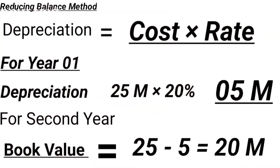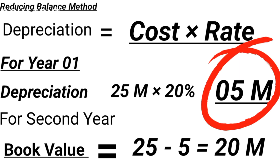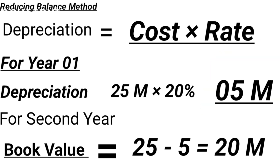Reducing balance method: cost multiplied by rate. For the first year, depreciation equals 25 million multiplied by 20%, which equals 5 million. So 5 million is depreciated in the first year. 25 million minus 5 million equals 20 million — this is the remaining book value for the second year.